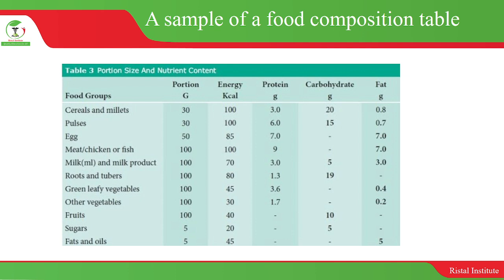This is a sample of a food composition table, which shows the amount of each nutrient in a particular food portion in grams. For example, looking at cereals and millet, 30 grams of this cereal and millet will give you 100 kilocalories of energy, 3 grams of protein, 20 grams of carbohydrates, and 0.8 grams of fat. For each food, you'll find that the amounts will differ according to the measurements.